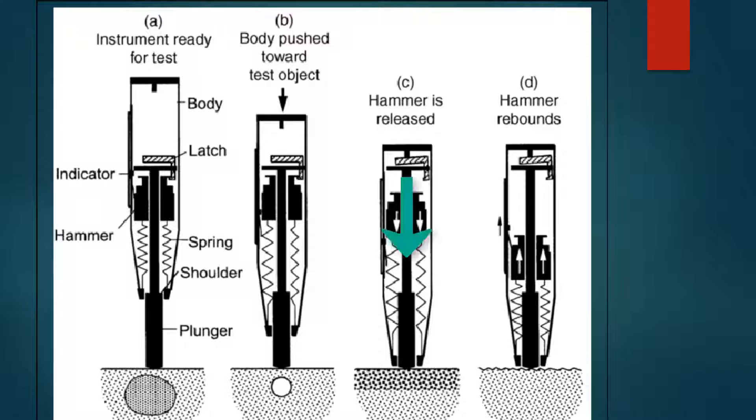Then the hammer mass is released. Finally, the mass will rebound against the concrete surface. The surface hardness and compressive strength will be correlated with the rebound of the spring-controlled mass.